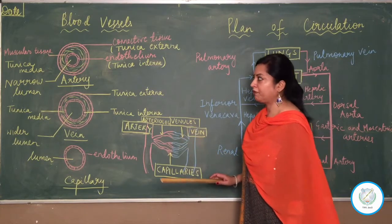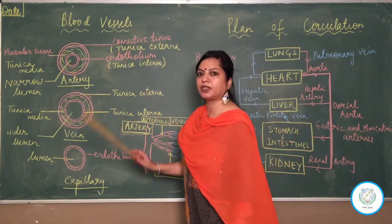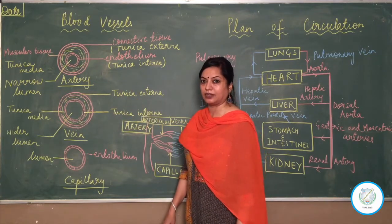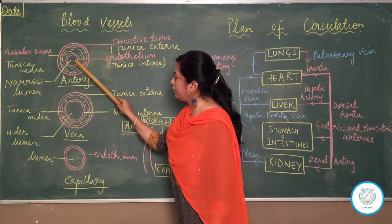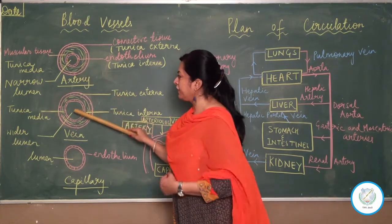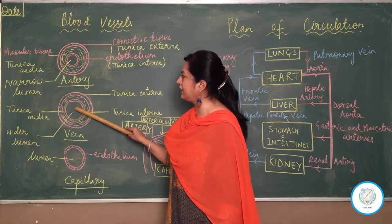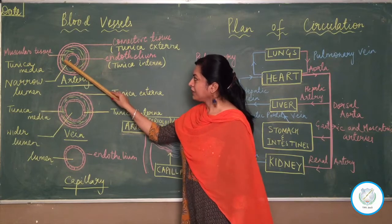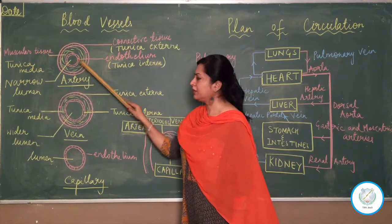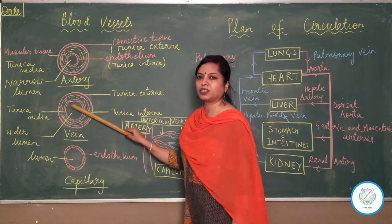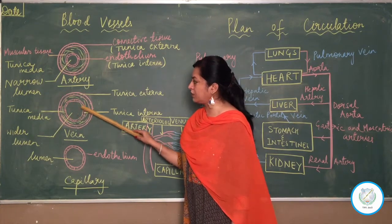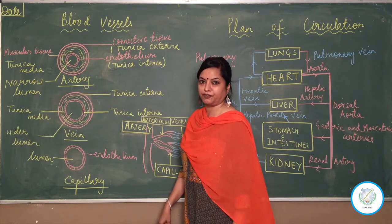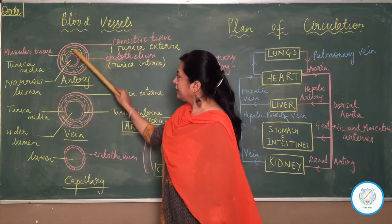Comparing artery and vein, look at the cross section. The central space, called the lumen or bore, is much wider in the vein and much narrower in the artery. So the third point of difference is: arteries have a narrow lumen and veins have a much wider lumen. It is through this lumen that blood is moving.